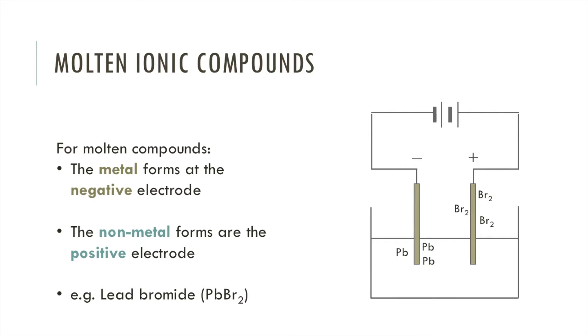We can see another example here of lead bromide: the metal lead is formed at the negative electrode and the non-metal bromine is formed at the positive electrode.